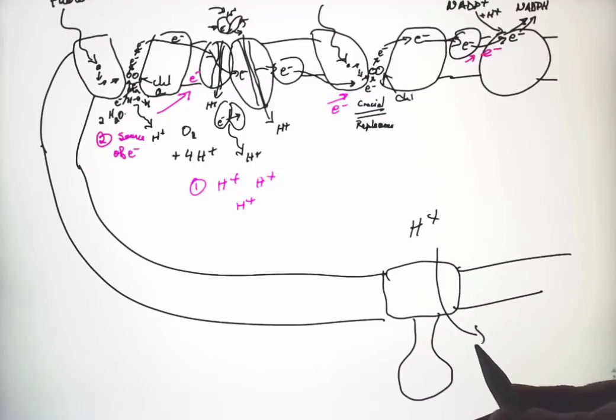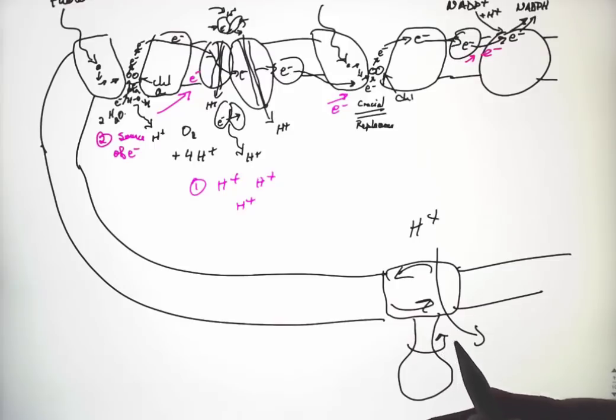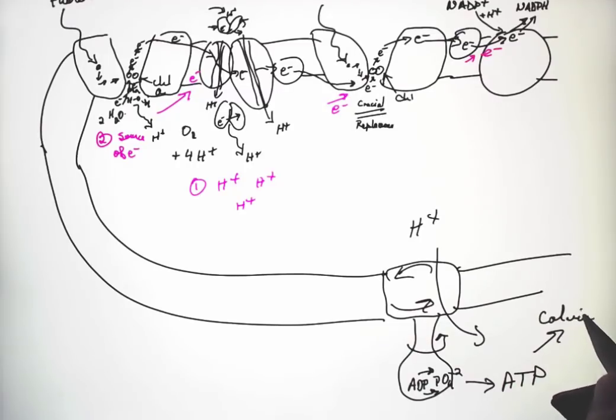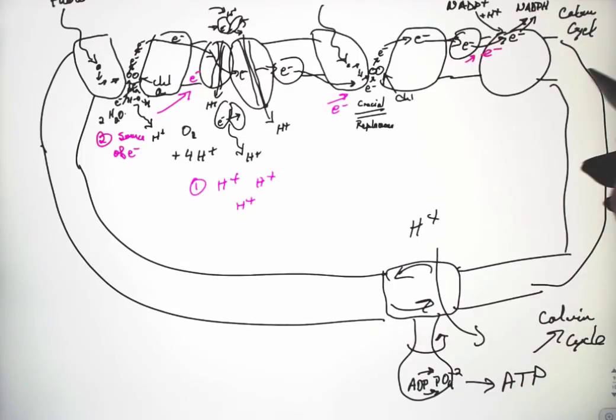Protons move through, turning it, forces ADP-2 and PO4-2. It takes a lot of force to do that, forces them together to get ATP. That ATP is sent to the Calvin cycle. This is all inside the chloroplast, so the ATP is purely going to make glucose, and NADPH also is going to the Calvin cycle.